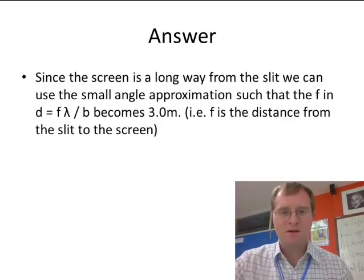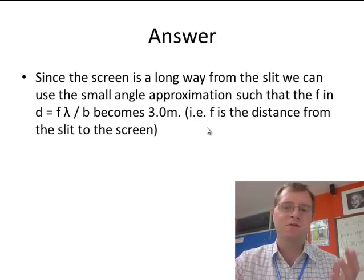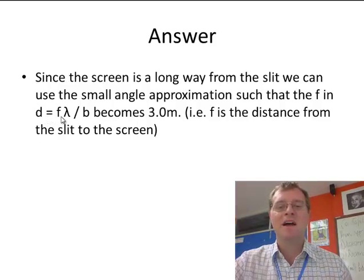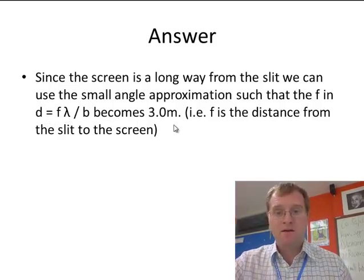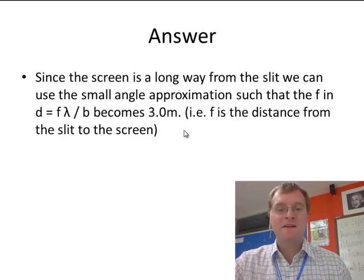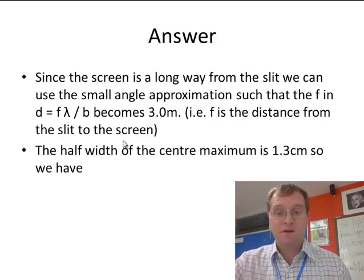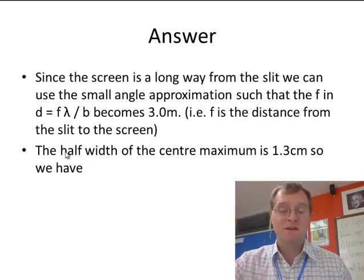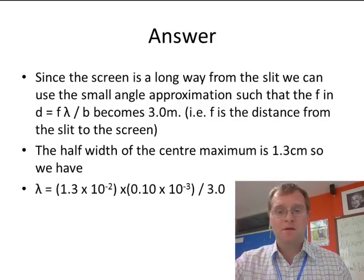Now I'm going to show you the solution. Since the screen is a long way away from the slit, we can use small angle approximation such that D equals F multiplied by wavelength divided by B. This means that F is the distance from the slit to the screen, that's going to be 3 meters. The half width of the center maximum is going to be 1.3 centimeters, so that's going to be the value D, the distance from the middle to the first minimum.